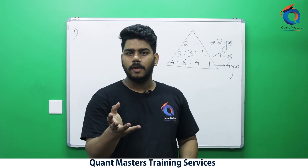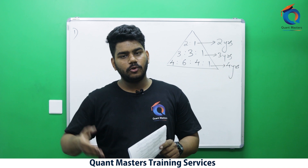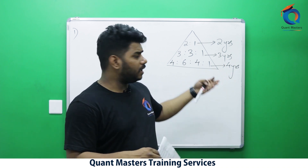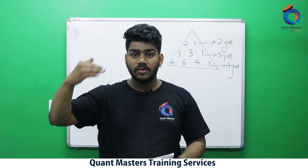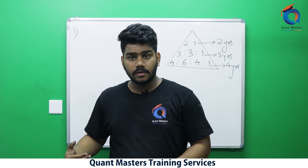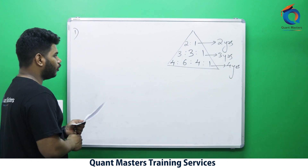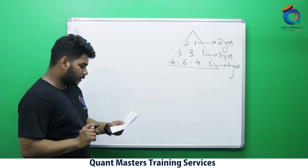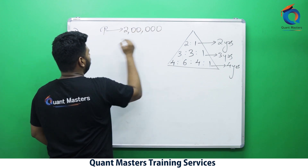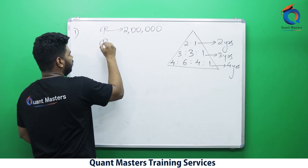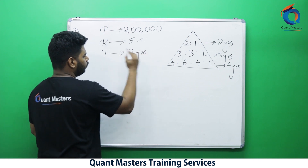The problem with all three methods is that you have to write a lot. For longer durations like four years, method three is inefficient. So here is method four — a faster approach. The question: principal is 2 lakh, rate is 5%, for two years.